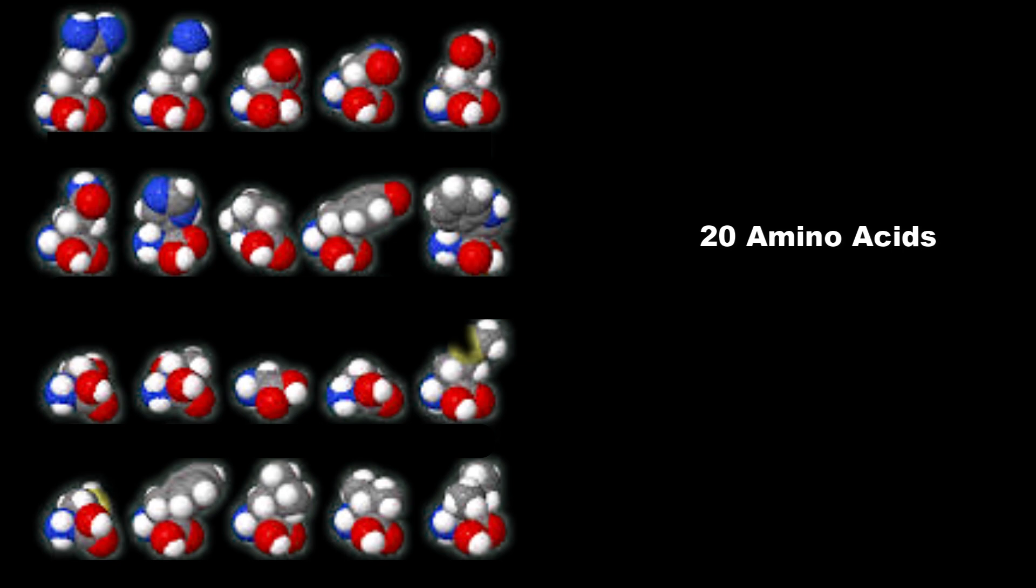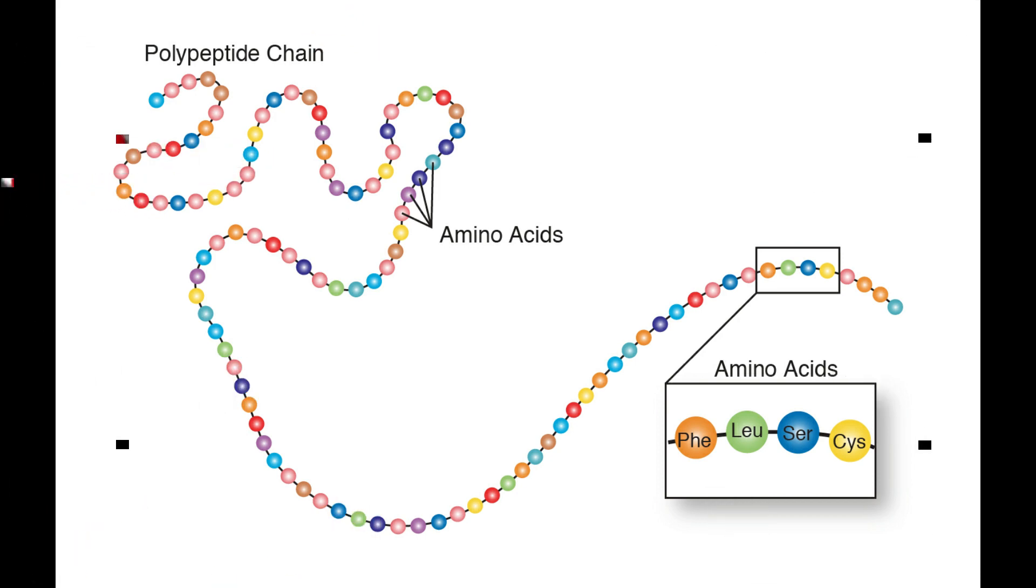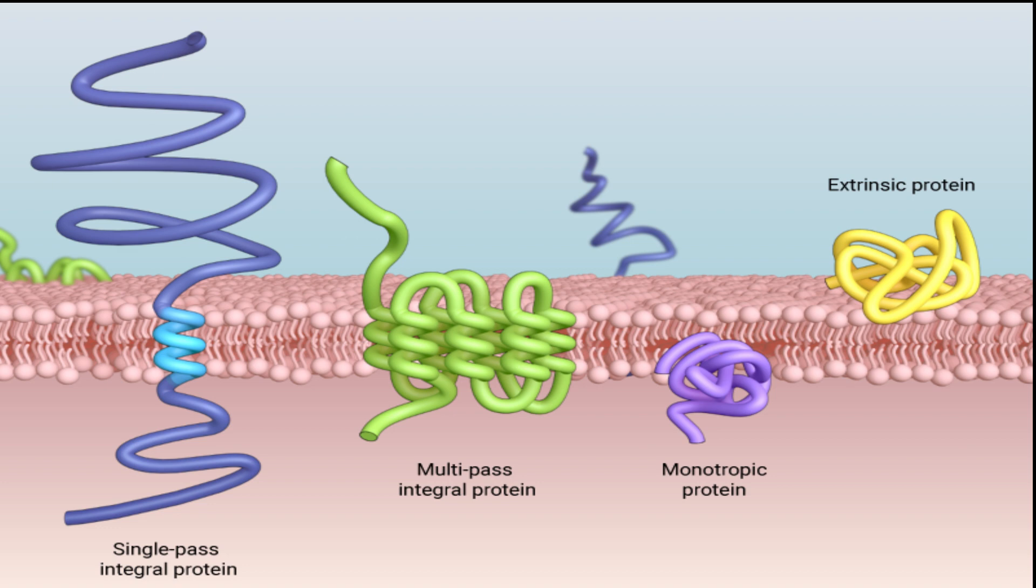The cool thing about proteins is that they all are made up of the same 20 amino acids. It's kind of like the alphabet, where we have 26 letters and we essentially just scramble them to make different words. Different proteins have different ordering of those same 20 amino acids to make a variety of proteins that all have different functions.